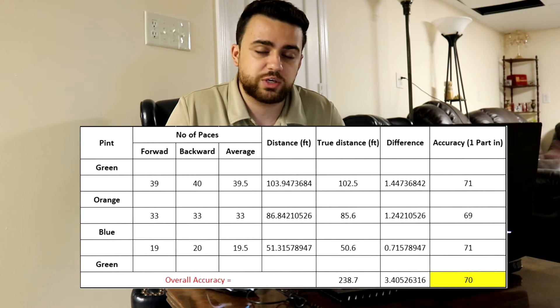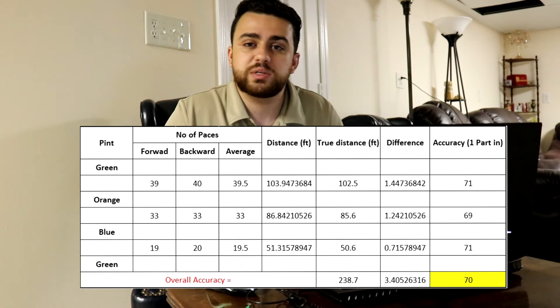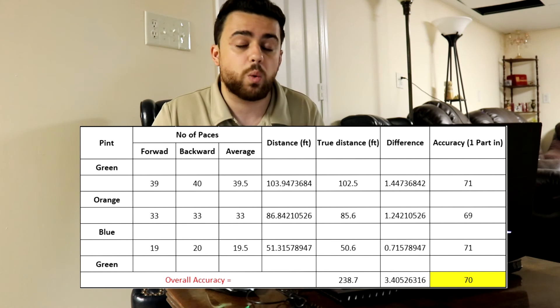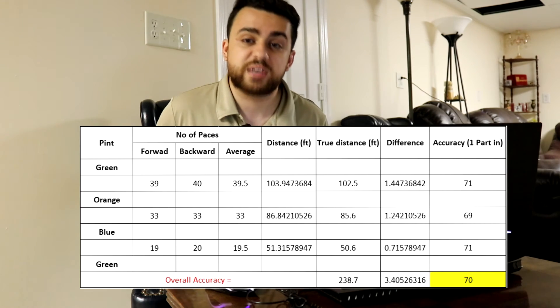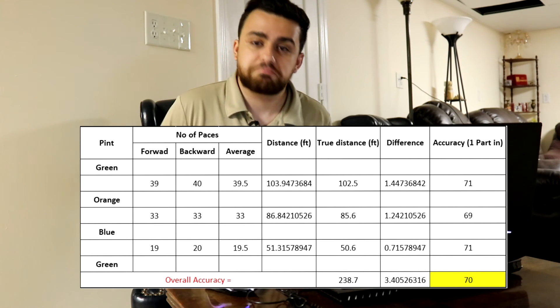Our overall error for the entire project was one part in 70 feet. To ensure you did a good job, you need to be above one part in 50 feet, and one part in 70 feet meets that standard. Thanks for watching everybody — I hope you learned something. Please subscribe to my YouTube channel. See you next time.